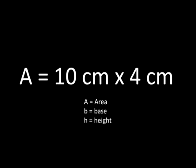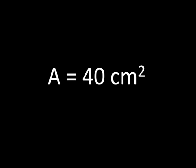Let's look back at the equation. The area is 10 centimeters times 4 centimeters. 10 times 4 is 40, and we need to remember to square our units because we're finding the area of something. So the area of parallelogram ABCD is 40 centimeters squared.